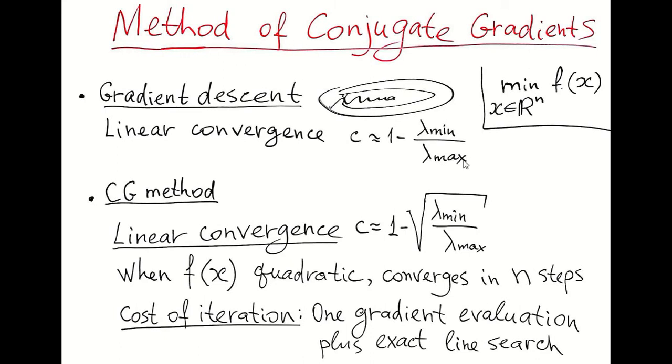Conjugate gradient method brings a compromise, a kind of compromise between gradient descent and Newton method. It has a linear convergence rate, 1 minus square root of ratio of minimal to maximal eigenvalue of Hessian. For example, if this ratio is 1 over 1000, here we will get about 1 over 30. So it will be about 30 times faster than gradient descent. When objective function is quadratic, it even may converge accurately in just n steps.